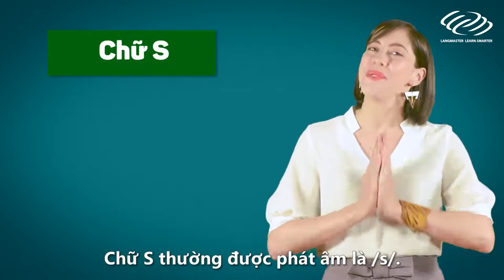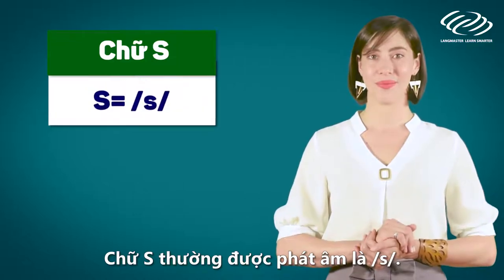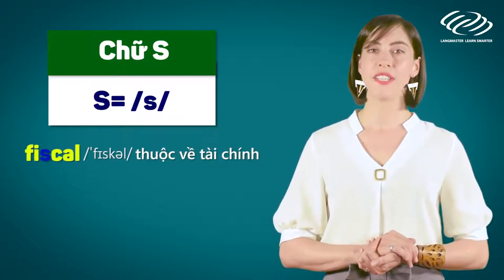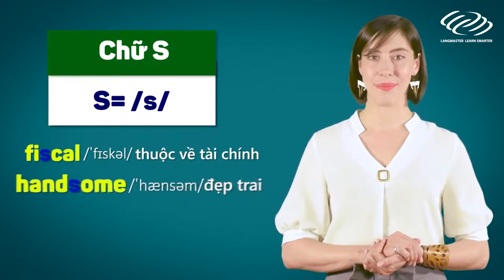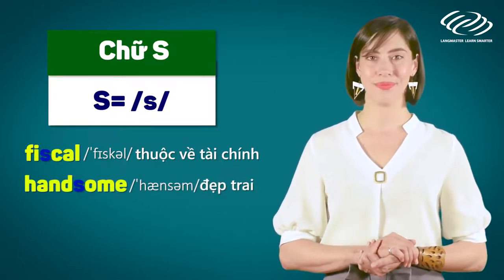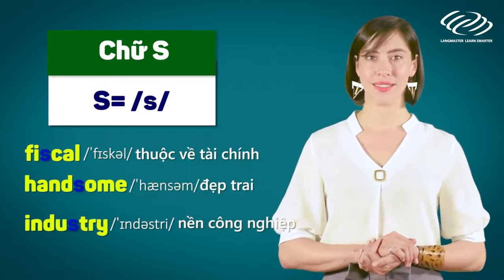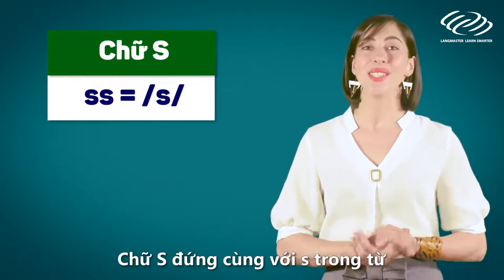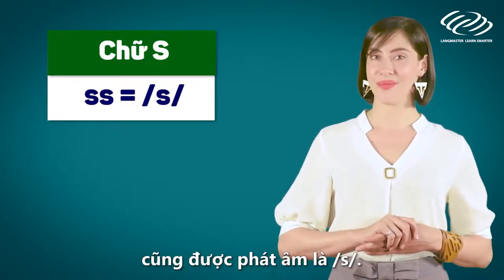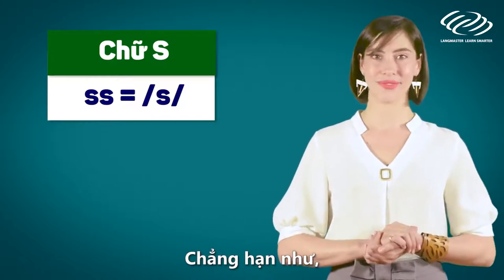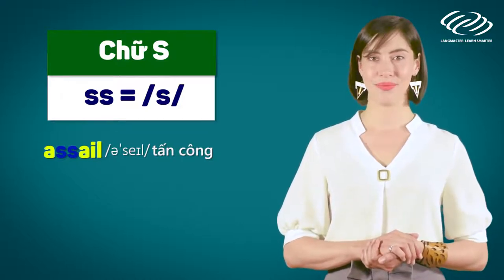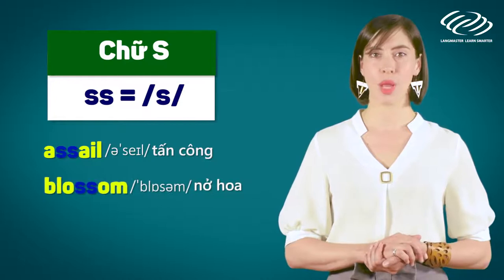The letter S. The letter S is often pronounced as /s/. For example: fiscal, handsome, industry. The double S is also pronounced as /s/, for example: assail, blossom.